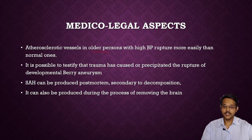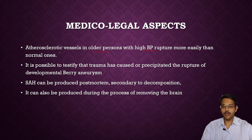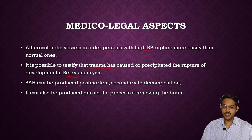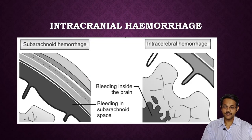Medical aspects of subarachnoid hemorrhage: atherosclerotic vessels in older persons with high blood pressure rupture more easily than normal ones; the commonest cause is older individuals with hypertension leading to aneurysms and rupture. It is possible to testify that trauma has caused or precipitated rupture of a developmental berry aneurysm, which may make a case of homicide. Subarachnoid hemorrhage can also be produced post-mortem secondary to decomposition, or during the process of removal of the brain.